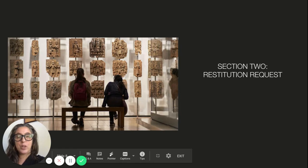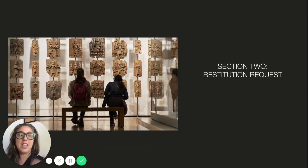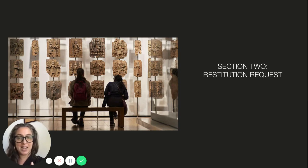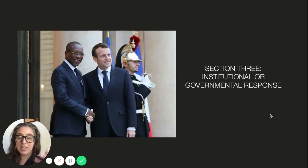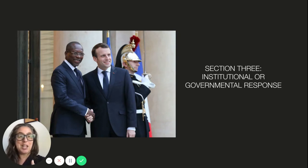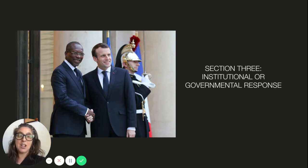The second section will present the restitution request — who has said this thing actually belongs somewhere else — and you will describe in writing what the call is for the return of the objects. The next section will address the response: for example, with the Benin Bronzes, some are in France, so here you write down the institutional or governmental response — what the museum, country, or person that currently owns these things says in response to the request for restitution.